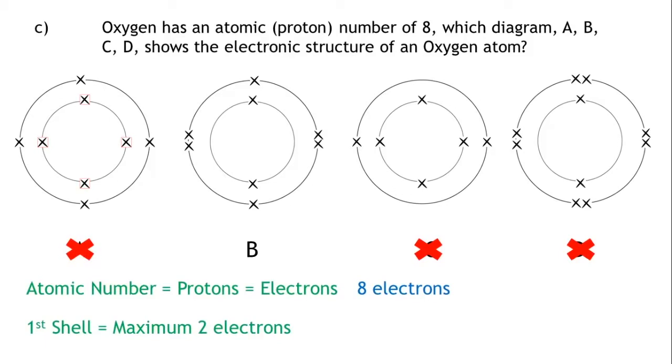Therefore, diagram B shows the correct electronic structure of an oxygen atom. It has two electrons in the first shell, and six electrons in the second shell, making up eight electrons.